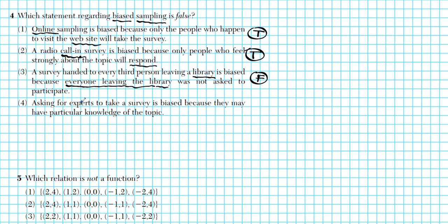Option four says asking experts to take a survey is biased because they have particular knowledge of the topic. You can see the bias there — experts and knowledge of the topic are directly connected. If you select only experts, they have particular knowledge. This statement is true. So clearly the biased sampling statement that is false is option number 3.